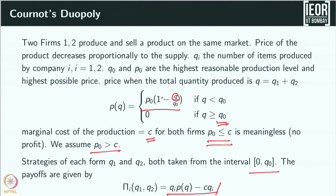The payoff: if firm 1 chooses Q_1 and firm 2 chooses Q_2, the price is P(Q) and firm i's profit is pi_i = Q_i * P(Q) - C * Q_i. Each firm's objective is to maximize their profit. We are now in a game setup with two firms making decisions and having defined payoff functions.